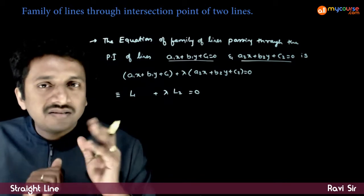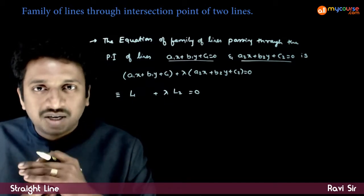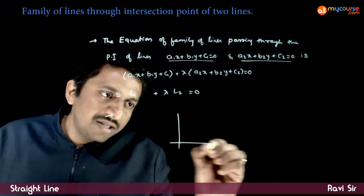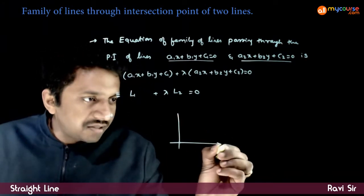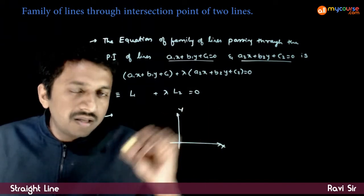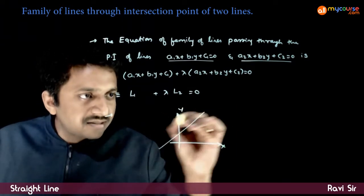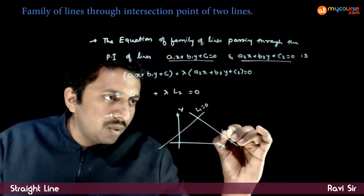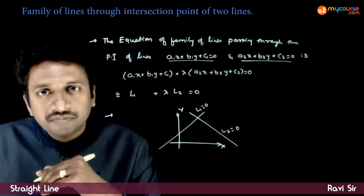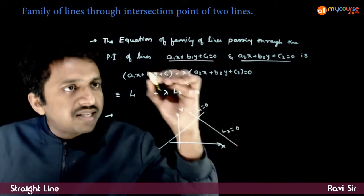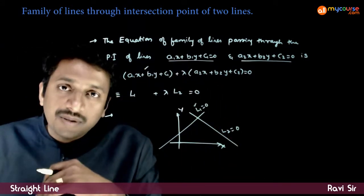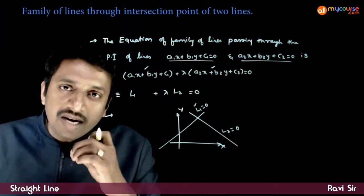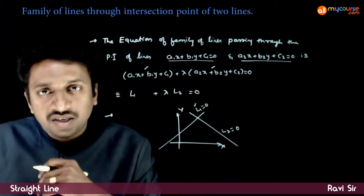Let us try to understand this statement — it is very important. Let us assume that on the Cartesian system you have two lines L1 = 0 and L2 = 0, where L1 means the expression a1x + b1y + c1, and L2 means the expression a2x + b2y + c2 = 0.